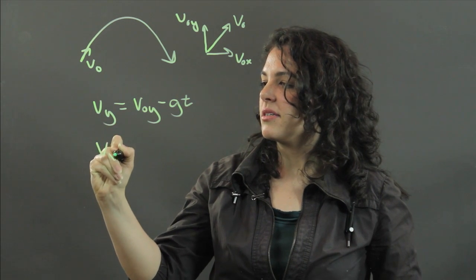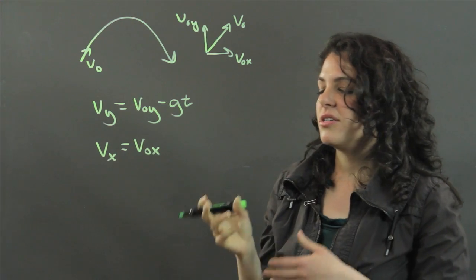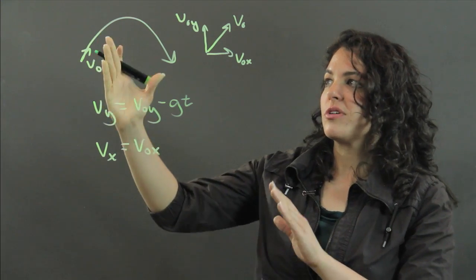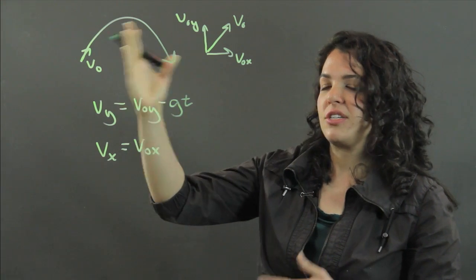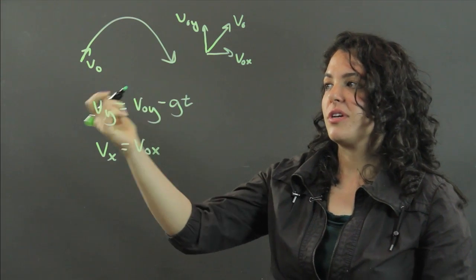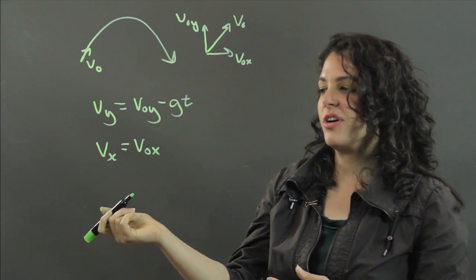And v sub x is simply v0x. Because there is no force acting in the horizontal direction, you have no acceleration. You don't speed up. You don't slow down. You continue in the same velocity in the x direction as you started it out.